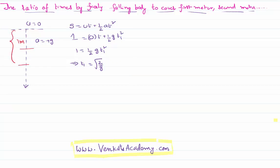Now let us use the same formula and calculate the time taken to cover all two meters. To cover a total displacement of two meters, I will use the same formula again. S is half g t squared. The distance covered is two, half g, the time is t2 squared. That implies t2 equals root 4 by g.